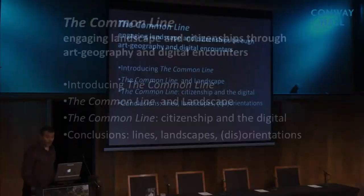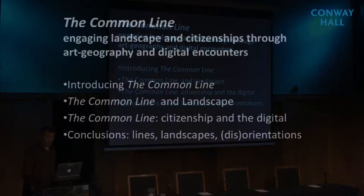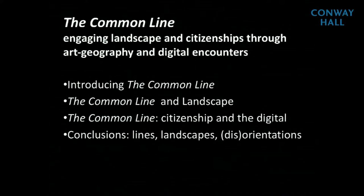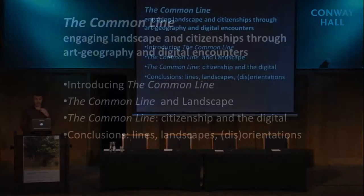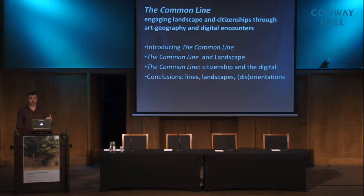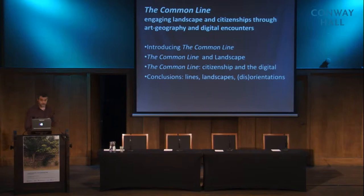Here's what we're going to do in terms of structure — a pretty straightforward structure. First of all, we're going to show you the Common Line, hopefully if it works, and introduce it and talk about who is involved and what the project is aiming to do. After that, I'll move on to a discussion of firstly the Common Line in terms of concepts and theories of landscape, and then secondly the Common Line in terms of citizenship — the key topic of this symposium today — in particular in relation to the digital. The conclusion is a bit more speculative, thinking about the Common Line in terms of disorientations and interactions.